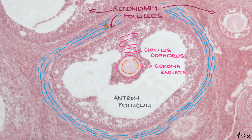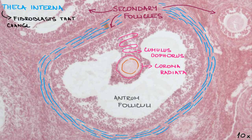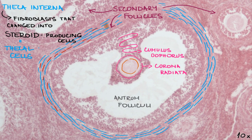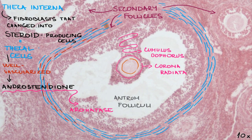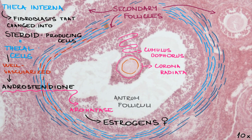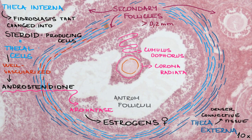Theca interna comprises fibroblasts which change in shape, forming round cells and changing their structure into steroid-producing cells; we call these changed fibroblasts thecal cells. This layer is a well-vascularized endocrine tissue. Thecal cells produce androstenedione, which then moves to the follicular cells. They have a so-called aromatase enzyme which converts androstenedione to estrogens — female sex hormones. There is one more layer around the theca interna called the theca externa, consisting of slightly denser but still loose connective tissue from the cortex. The secondary follicle has more than 0.2 millimeters in diameter and keeps growing into a mature Graafian follicle.